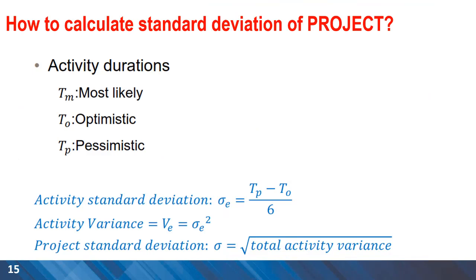The standard deviation of the project has been used in our calculations, but how is it calculated? For each activity, we have the most likely, optimistic, and pessimistic times. We can calculate the activity standard deviation as the difference between pessimistic and optimistic time divided by 6. The variance is the standard deviation squared, and then we can calculate the total variance for all activities in the project — the square root of this total gives us the project standard deviation.